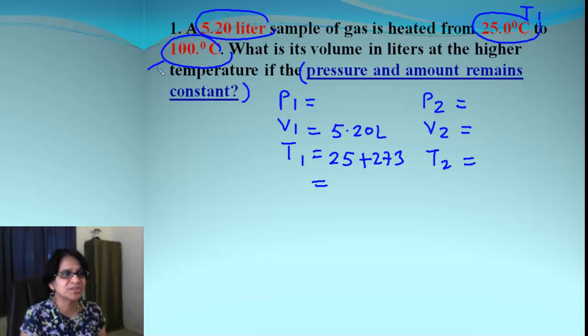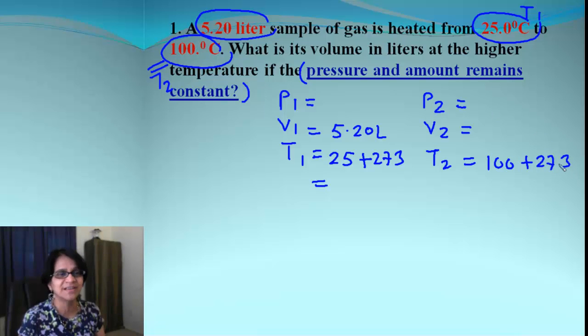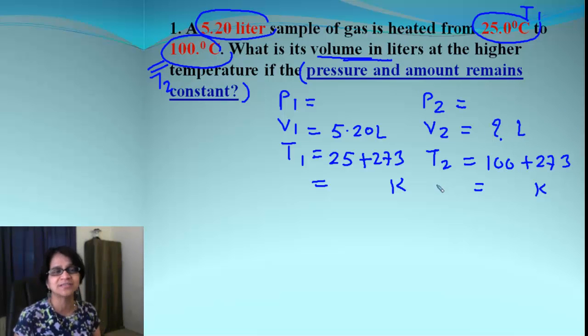Then, this is the temperature which is the final temperature. So, that is T2, and that will be 100 plus 273. And that will be the answer which I get in Kelvin. And then, what I need to find out? I need to find out the volume in liters.